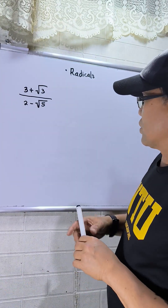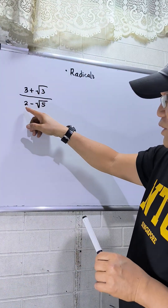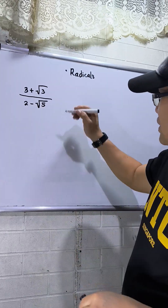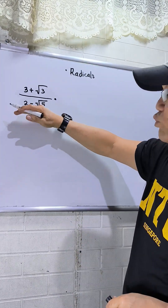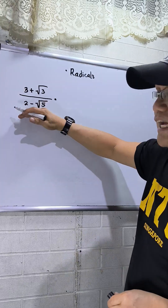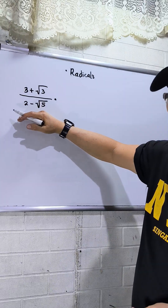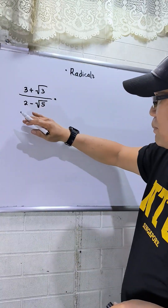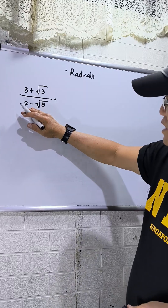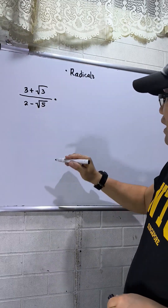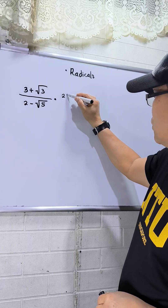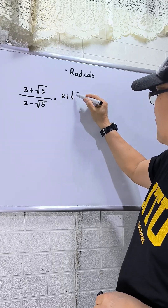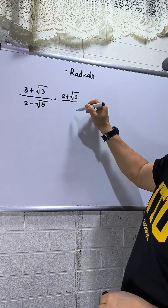I will start my discussion. I have three square root of three over two minus square root of five. As I said, I need to rationalize the denominator. To rationalize the denominator, find the conjugate. The conjugate requires you to change the sign of the operation in the denominator, so the conjugate will be two plus square root of five.